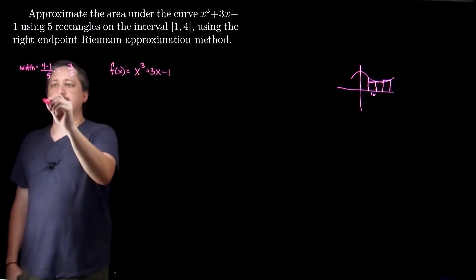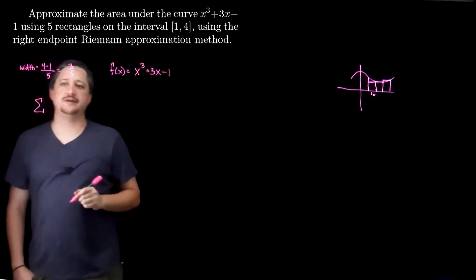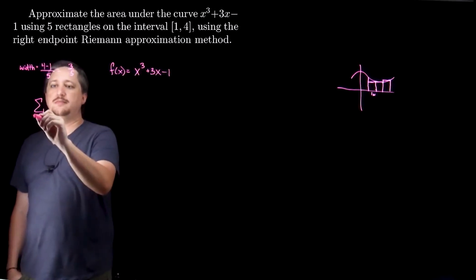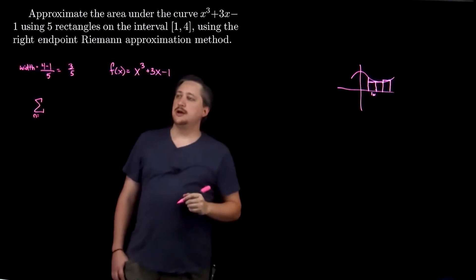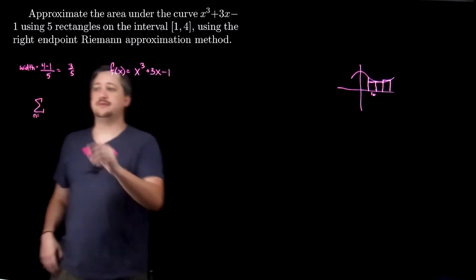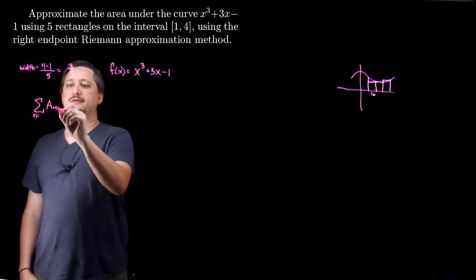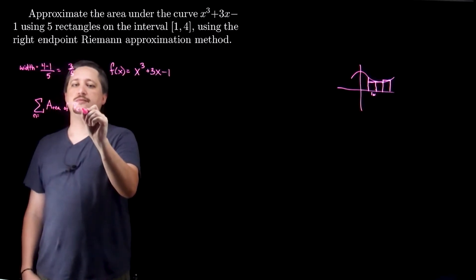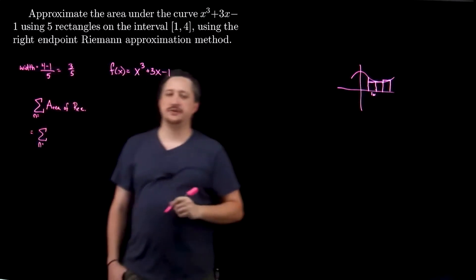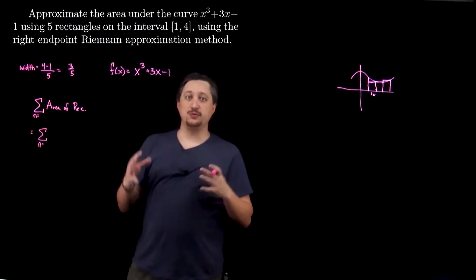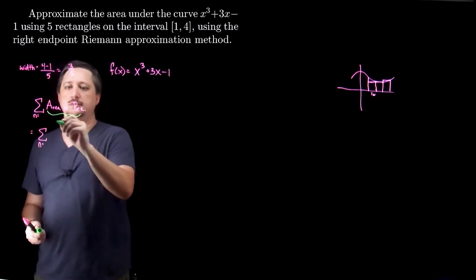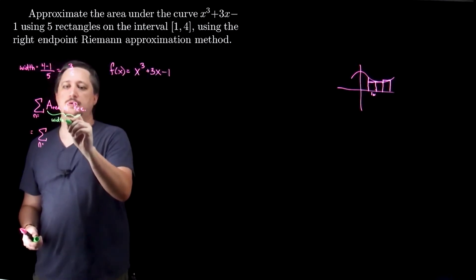I'm going to have some kind of Riemann approximation sigma notation sum. I'm going to have some widths, and my actual formula is just the sum of the areas of my rectangles — sum n going from something to something. The area is width times height.